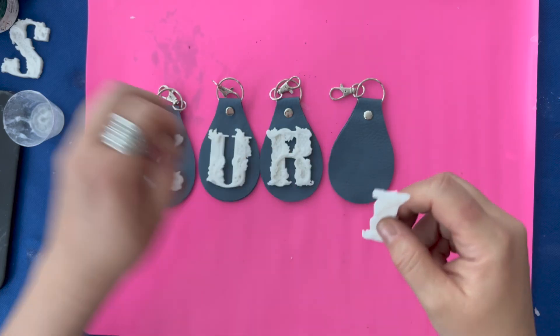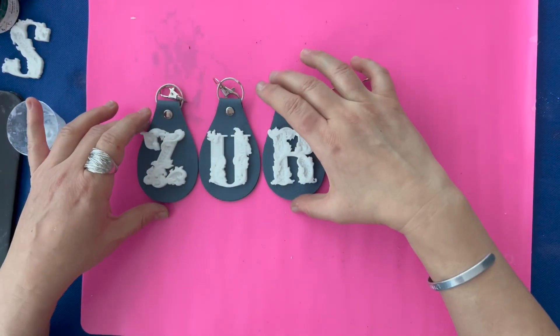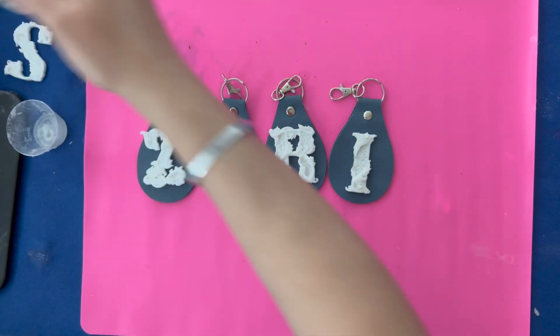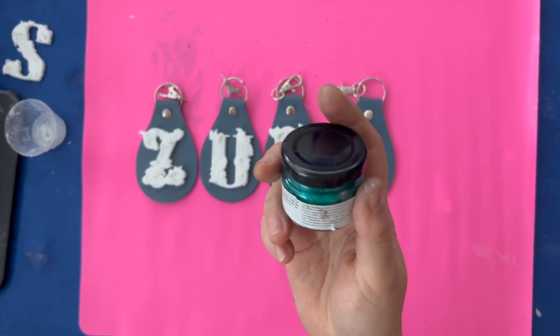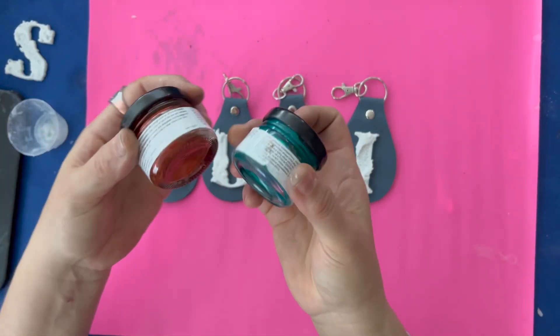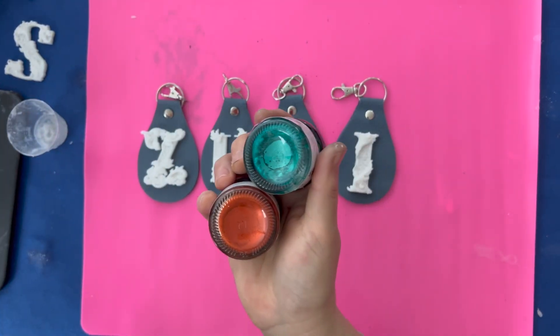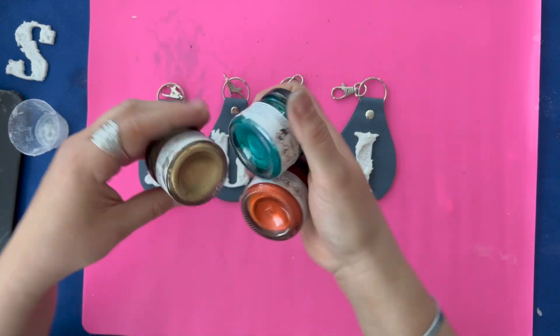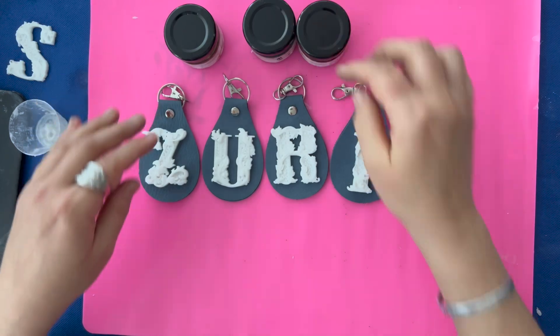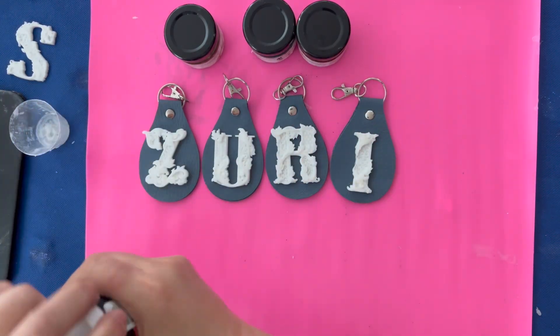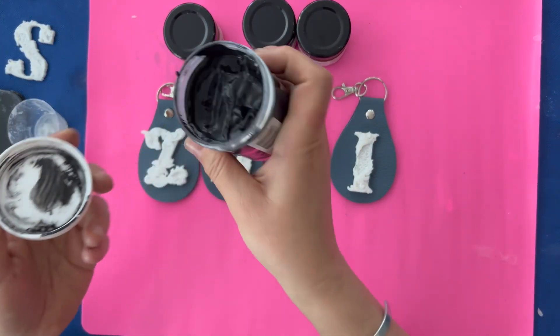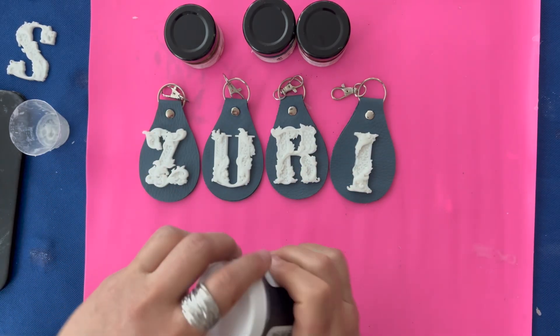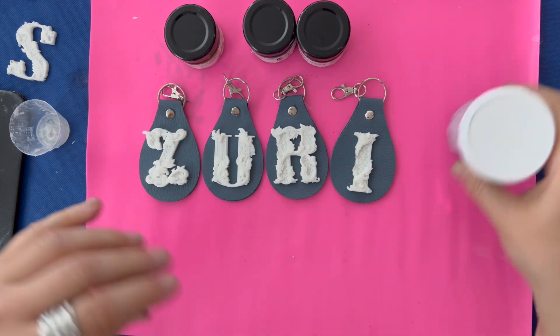For this project, I'm also going to use waxes, and it's going to be Zuri Designs waxes, starting with the Bora Bora, the Phoenix Blaze, and the Venetian Gold. I'm also going to apply gesso on my letters as a base, so I can put my wax last. And this concludes our project today.